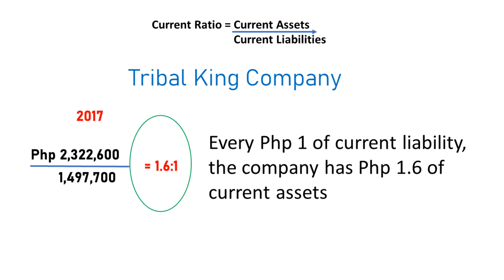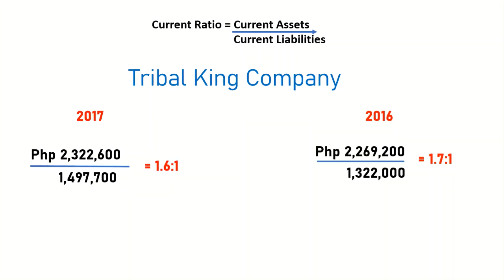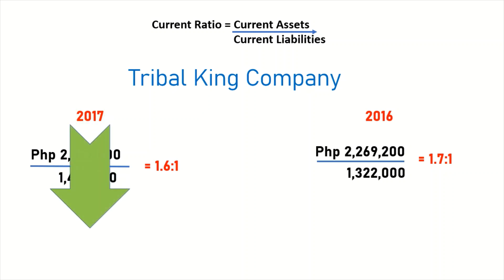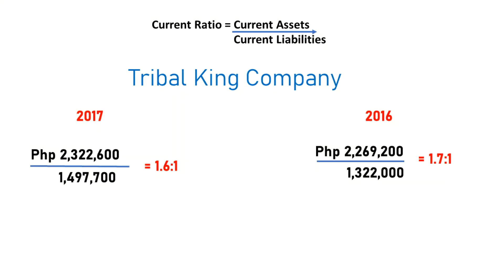The current ratio has decreased in the current year. We can see that the current ratio for the year 2016 is 2.1, while for 2017 it is 1.7.